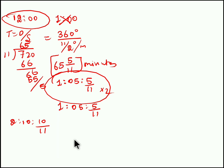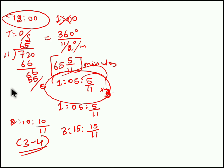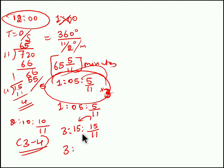Imagine you get a question: between 3 o'clock and 4 o'clock, exactly at what time do both the needles coincide? You have to multiply by 3. When you multiply 3 by 5 you get 15, giving 15/11 for the seconds part, and 3 into 5 is 15 minutes with 3 hours. In 15/11 we have a complete 1 minute with remainder 4. So carrying that 1 minute to the 15 minutes gives 3 o'clock, 16 minutes and 4/11 seconds — that is when both needles coincide between 3 and 4 o'clock.